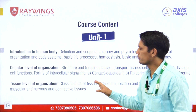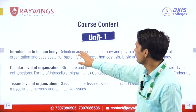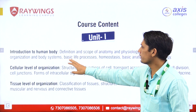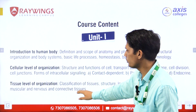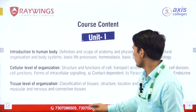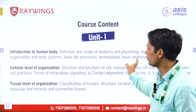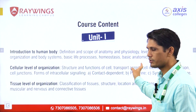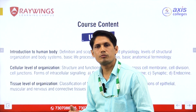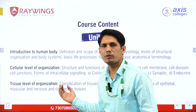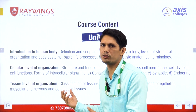This is the first unit: the introduction of human anatomy, cellular organization and tissue levels. The unit covers the definition of anatomy and physiology, homeostatic mechanisms, cellular levels, what cells are, types of cells, and cell organelles.